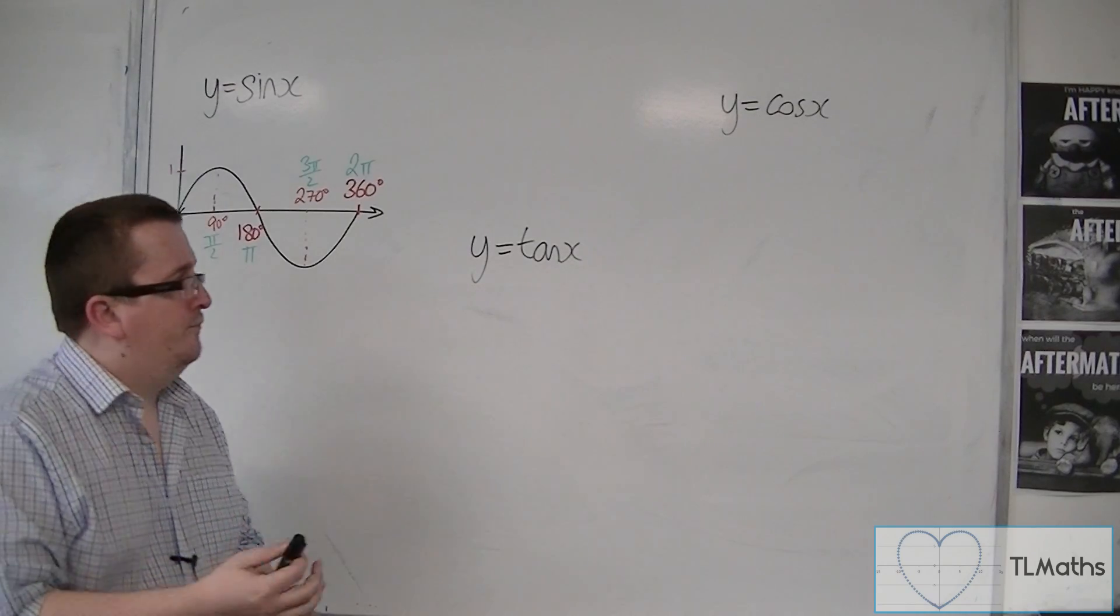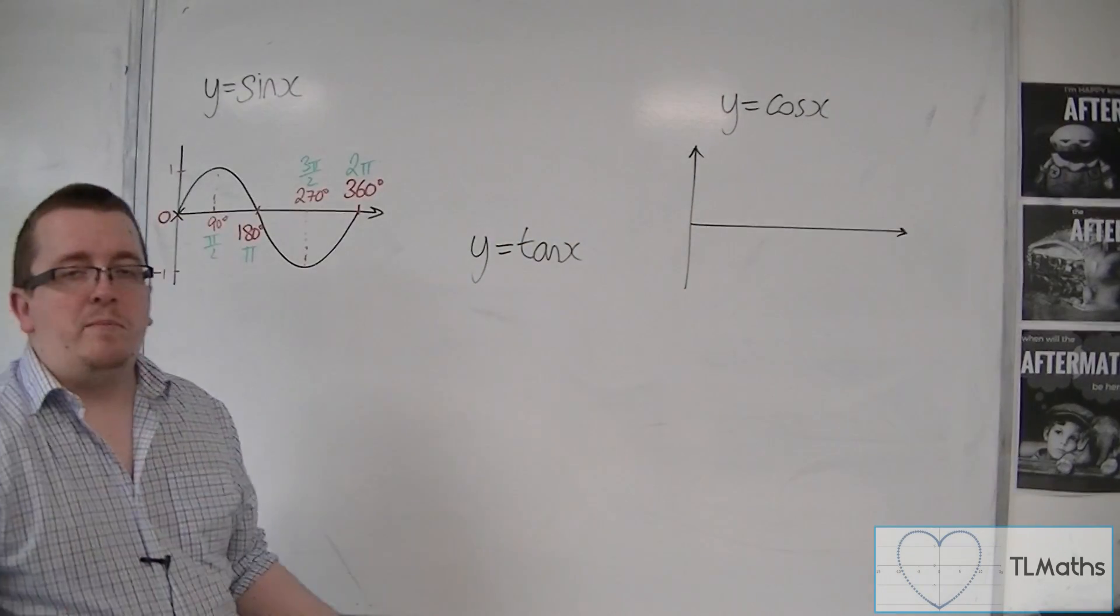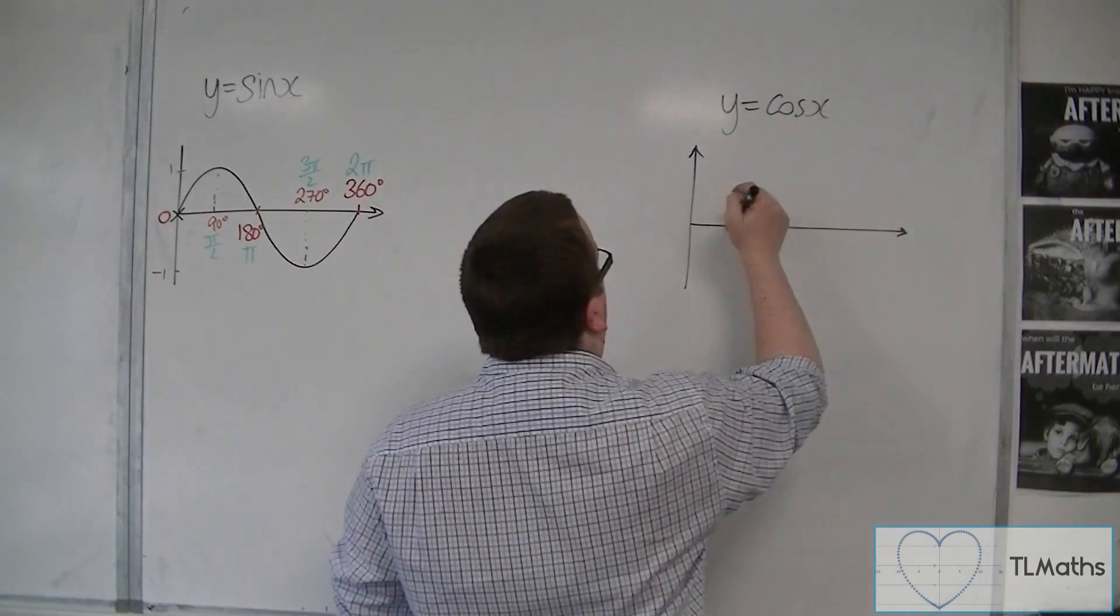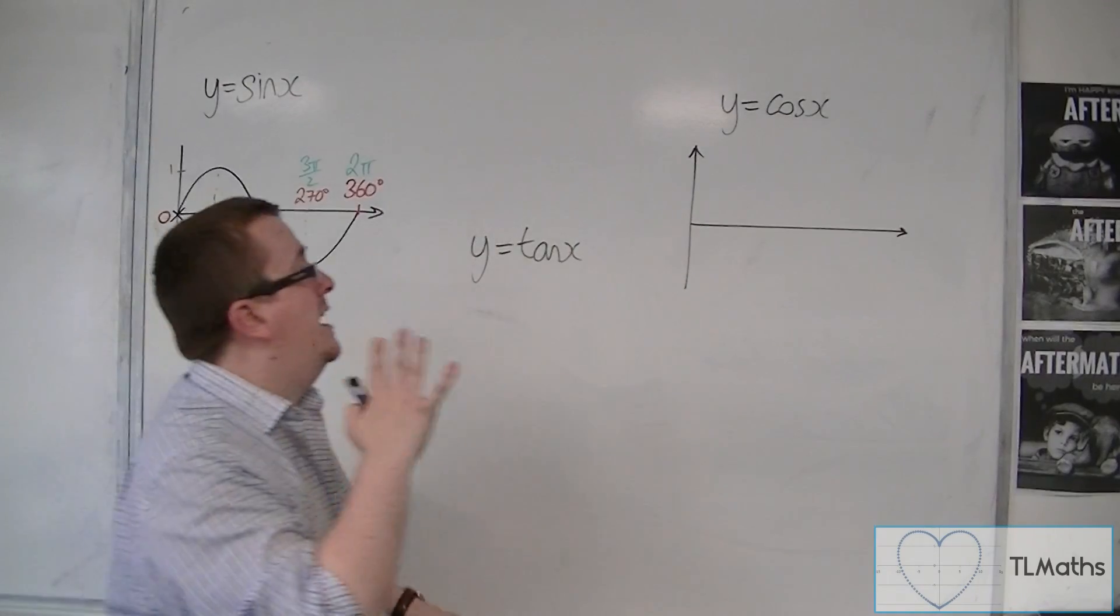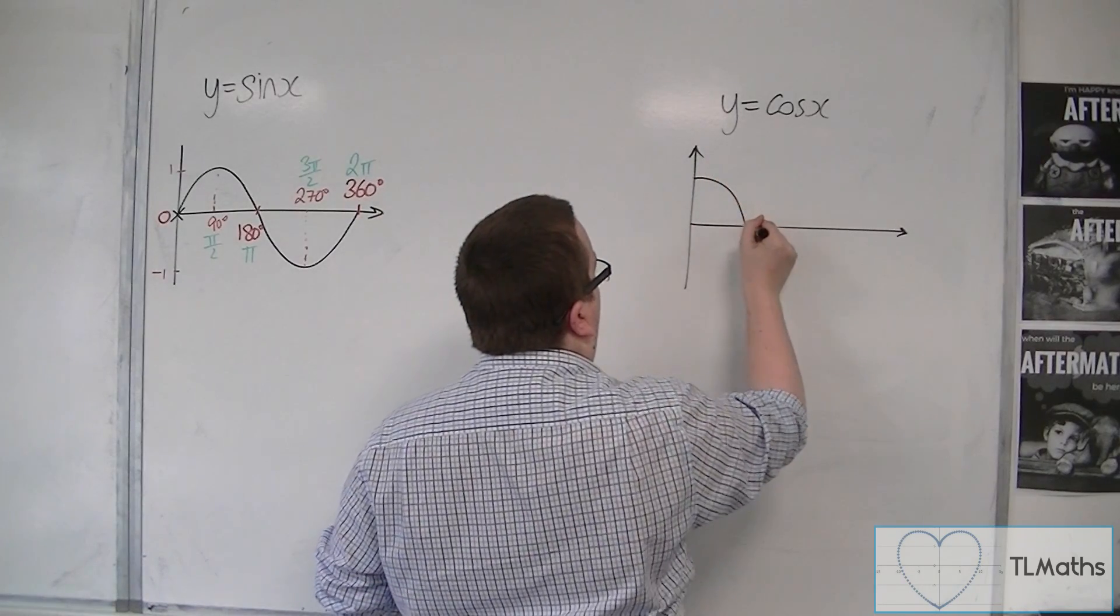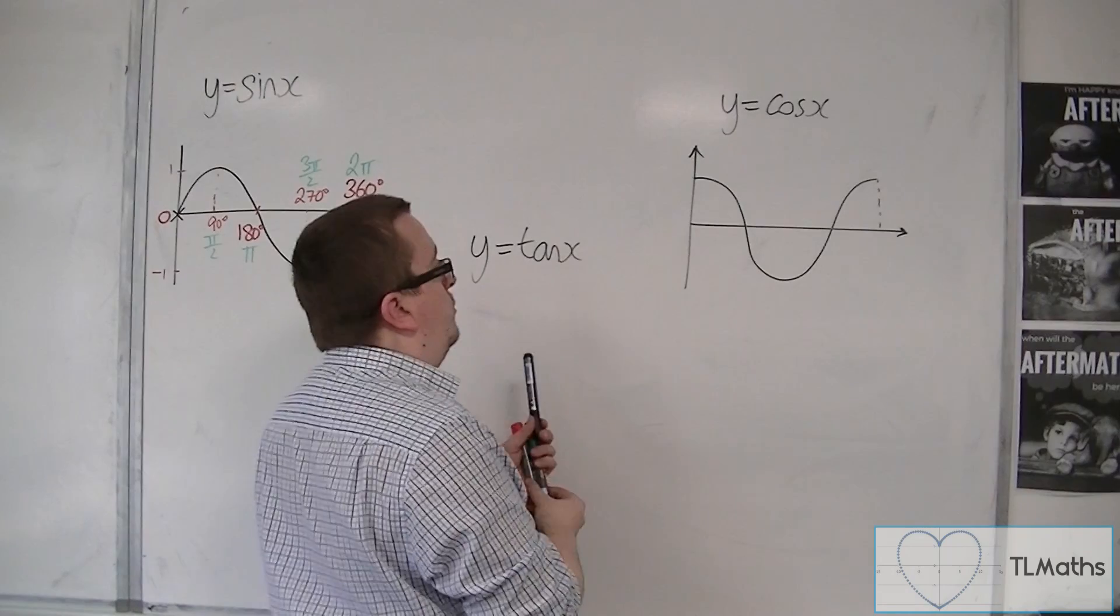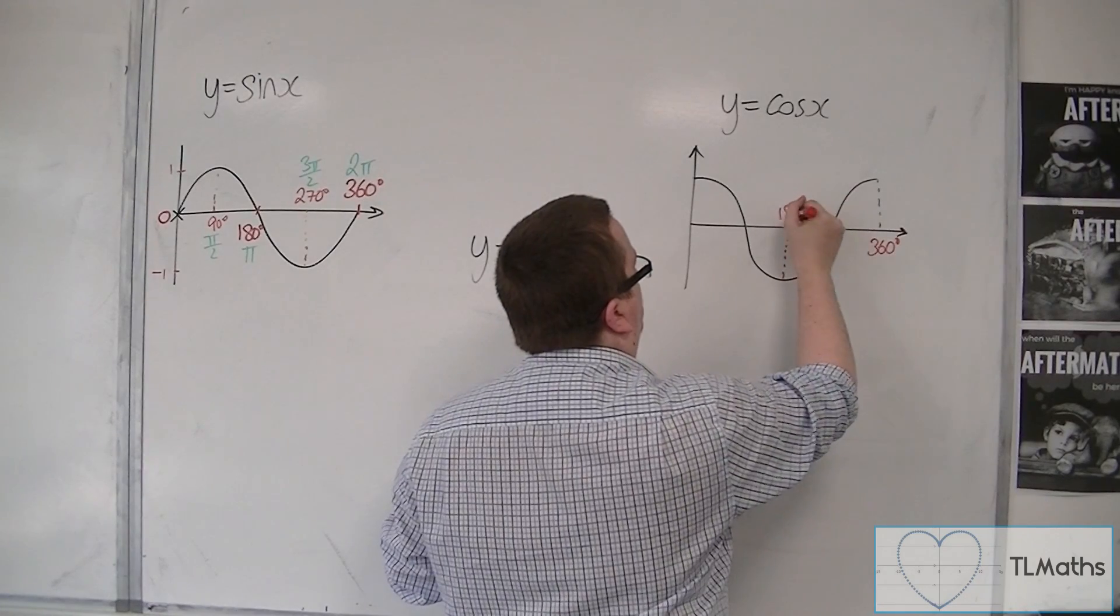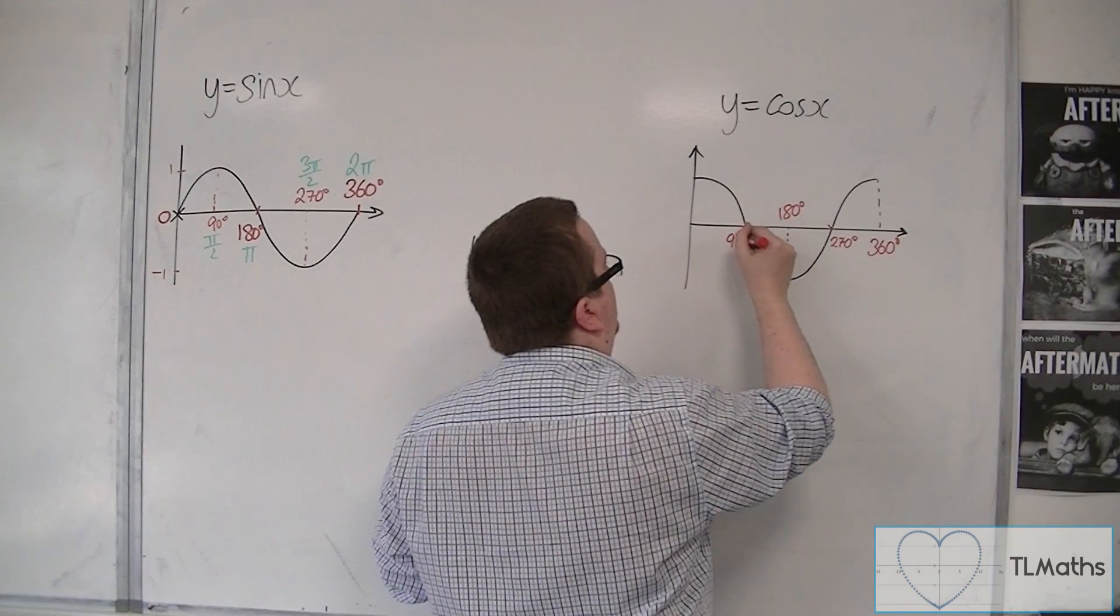Cosine is actually exactly the same curve, but it has been translated along the x-axis. The cosine curve, if you put cos of 0 into your calculator, you should get 1. That tells you where you're starting, at (0, 1). The curve looks like this. This final point is at 360 degrees, this point is at 180 degrees, this point is at 270, and that point is at 90.